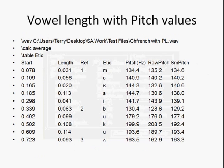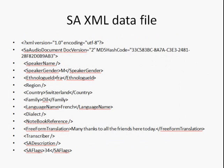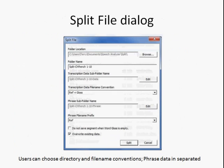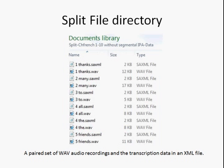The XML file that contains all the data is shown here. Whenever a split file is run, the user can choose the location for the smaller word files themselves, along with the pitch and phrase data. The result is two files: the data file and the recording, the WAV file.